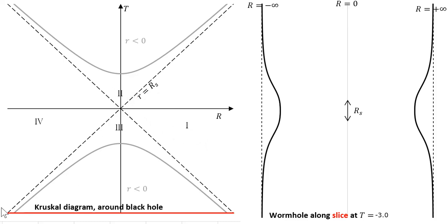So what we're going to do is take a slice, a constant Kruskal time across the Kruskal diagram, and then we're going to make a wormhole and draw it over here. We're going to gradually advance Kruskal time and see what happens to the wormhole.